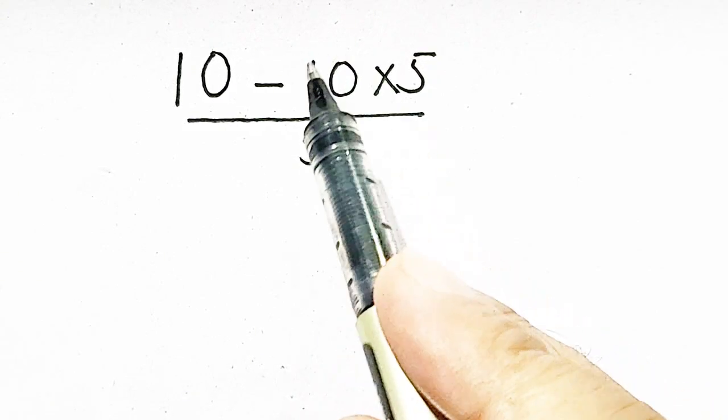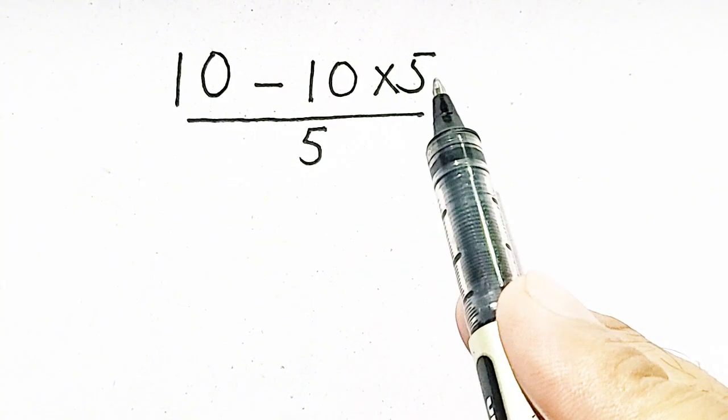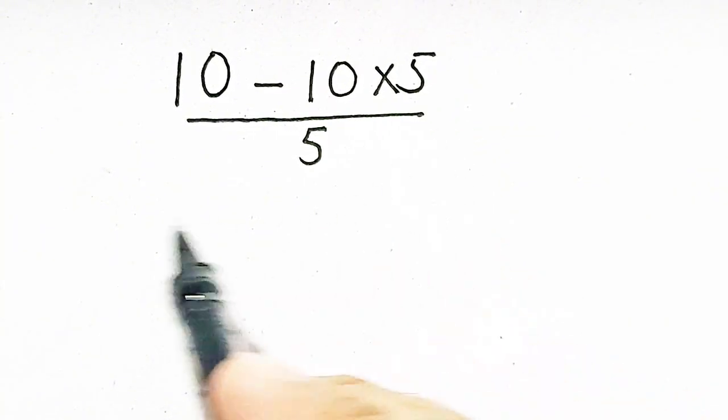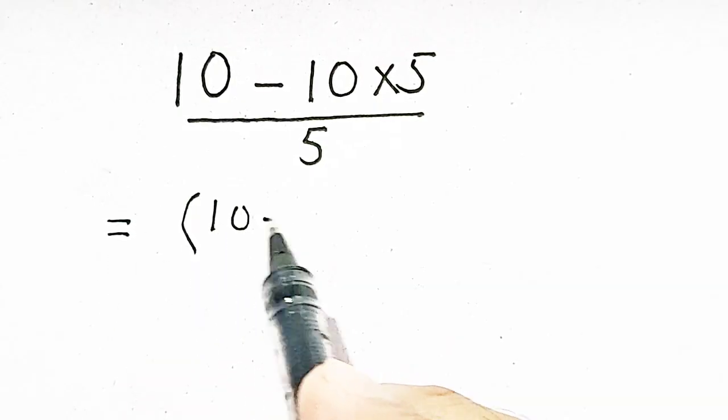First of all, we will multiply minus 10 times 5, or we can adopt a way where we make two parentheses.